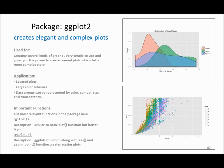ggplot2 is another package used to create several kinds of graphs. It is very simple to use and can produce very complex graphs in just a few lines of code. In this example I am comparing three types of cars with three, four, and five gears with respect to miles per gallon, putting several layers in the plot to give more information. You can represent data groups by colors, symbols, and transparency.